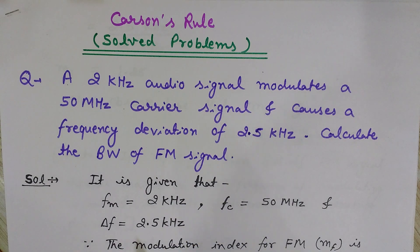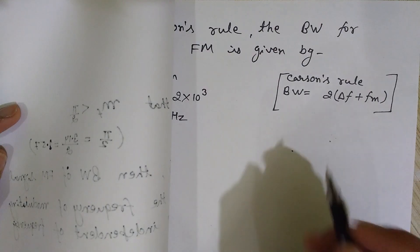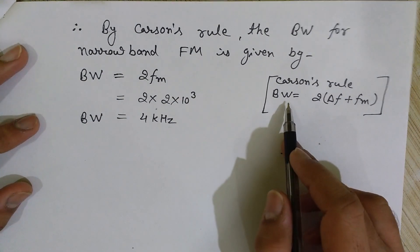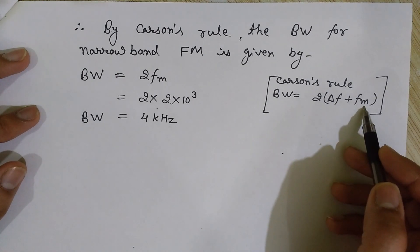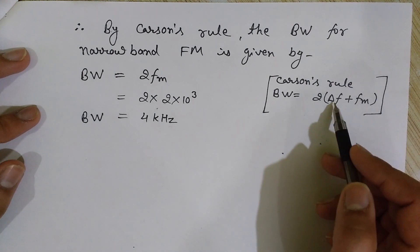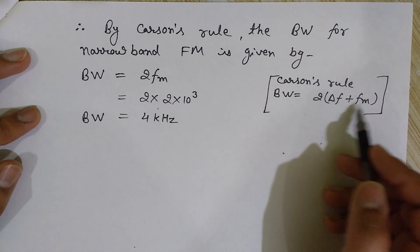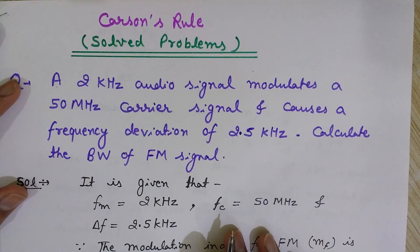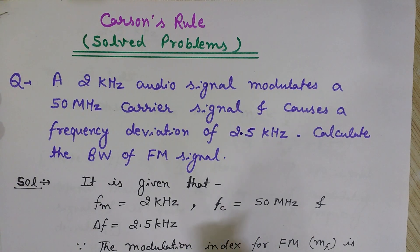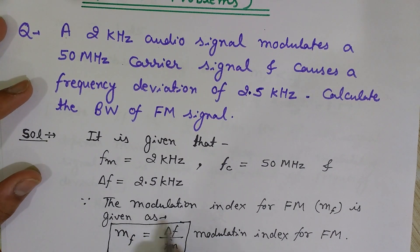The frequency of the carrier is 50 megahertz and delta F, the frequency deviation, is 2.5 kilohertz. If I use Carson's formula to find the bandwidth — Carson's rule is given as: bandwidth equals 2 times of (delta F + FM). I have both delta F and FM, so you might think I can simply put in the values and get the bandwidth. But it is not so — you need to be careful.